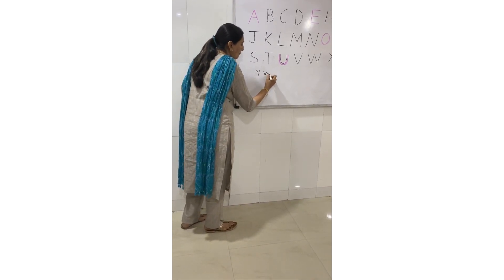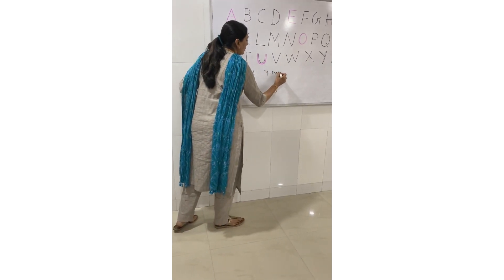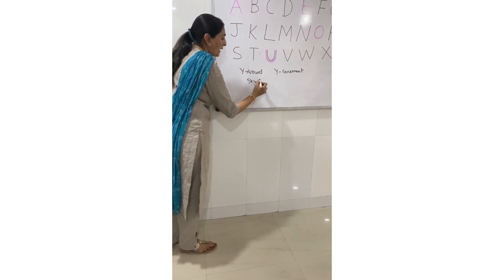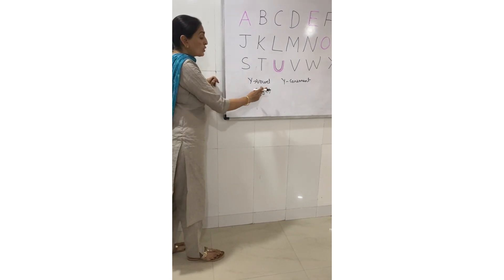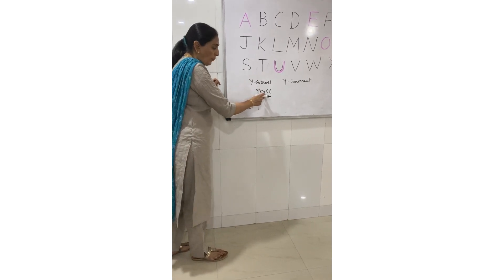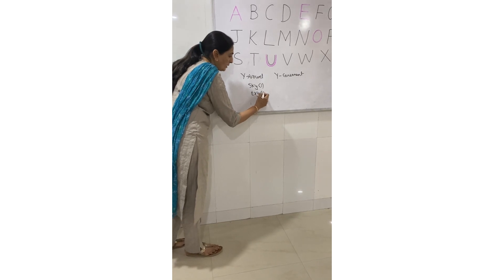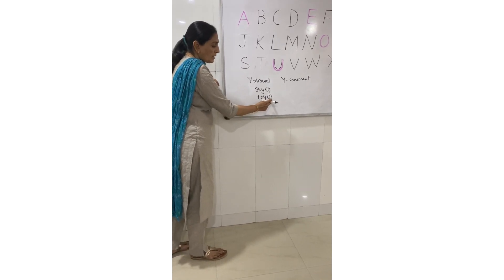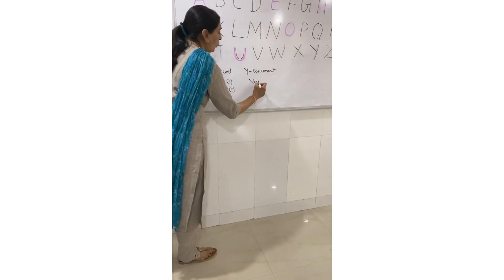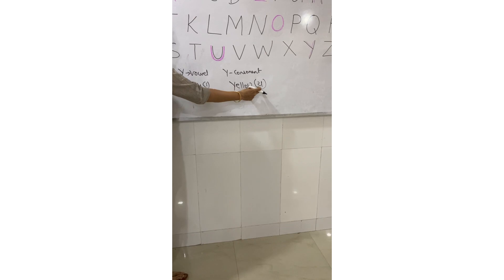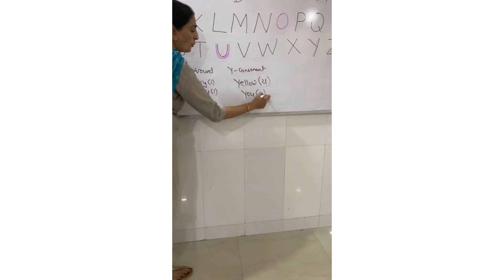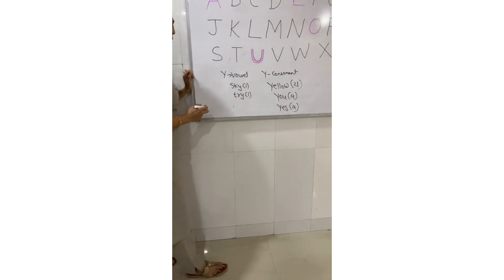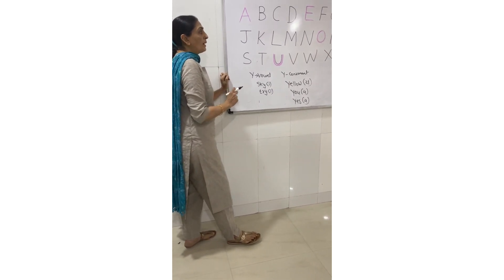Now let us see Y as a vowel and Y as a consonant. If we write 'sky' — S, K, Y — the last sound is 'I', so Y here is a vowel. Similarly, 'try' — T, R, Y — the last sound is 'I', so Y is a vowel. But if you write 'yellow', the sound is 'Y', so it is a consonant. Similarly, 'yes' — the sound is 'Y', so it is a consonant.